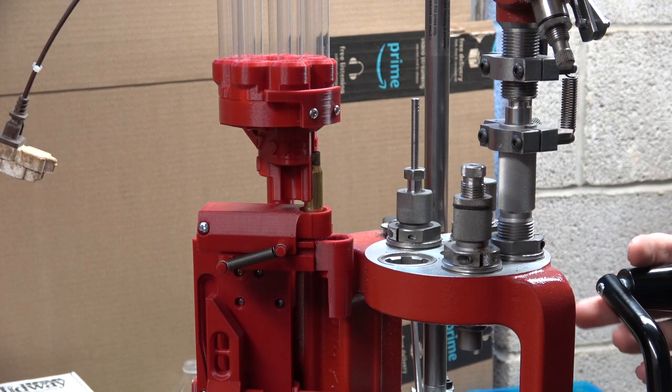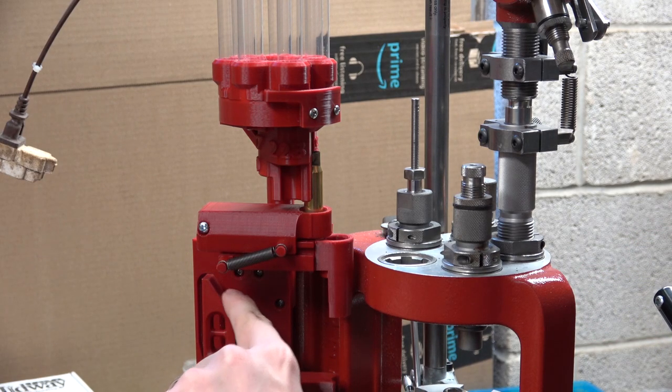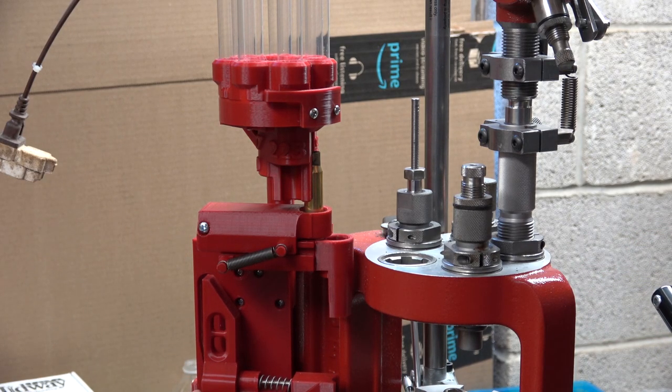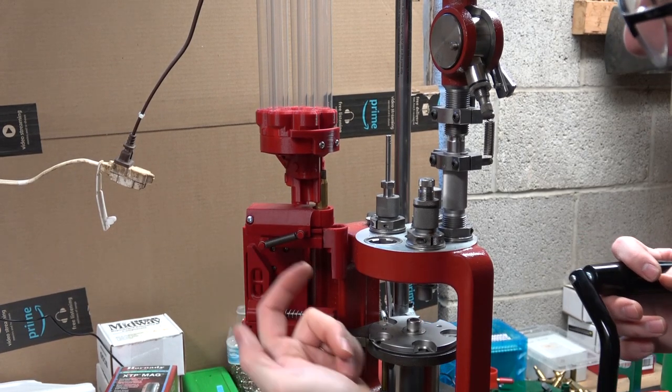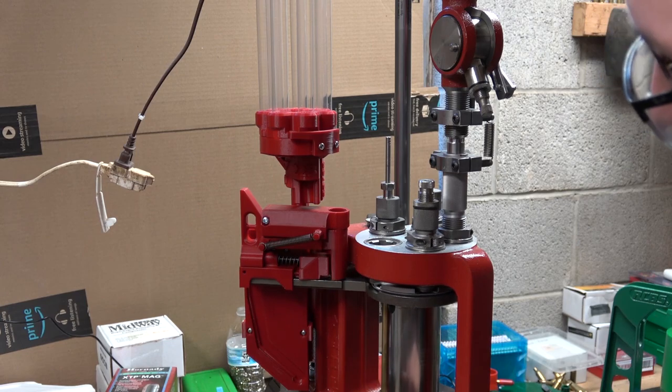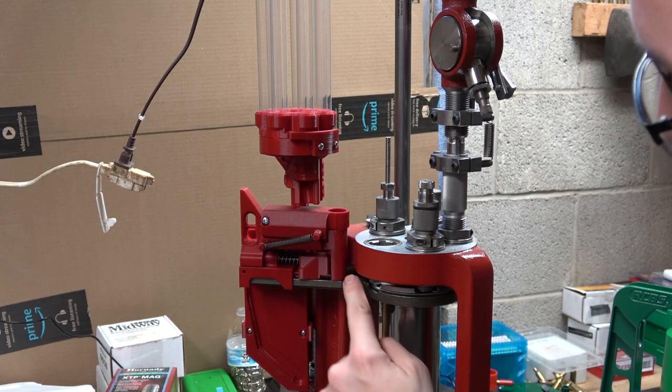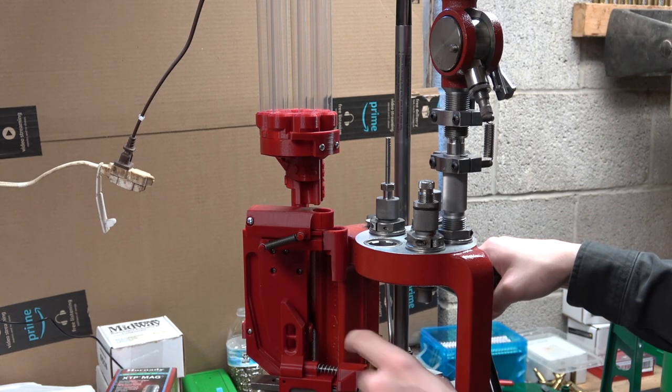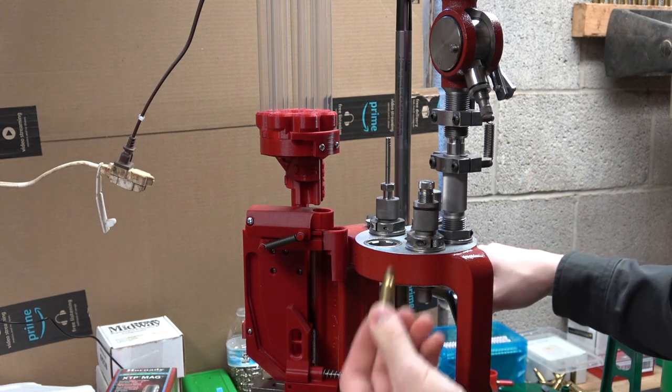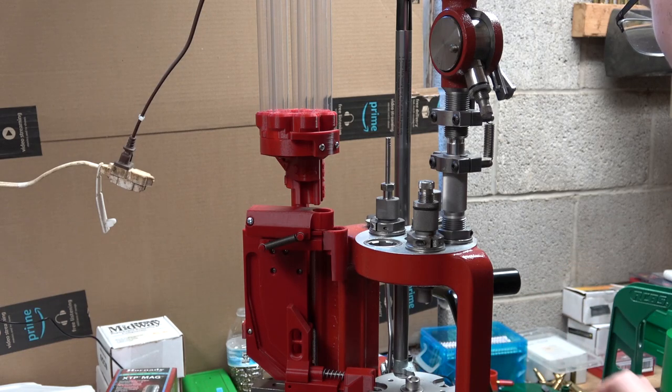So we'll come up on the ram, this block that's attached to the, that rides on the case feeder shelf, engages the back of this, kicks the case forward, and drops it down into here. And of course that's not going to go in here because it is a 308 case and I've got a 9mm shell plate in.